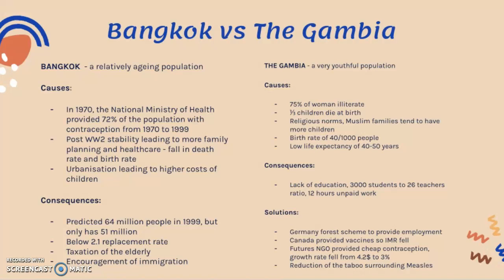Some solutions include Germany investing in a forest scheme to provide employment in the Gambia, Canada providing vaccines which led to a fall in the infant mortality rate, and Futures, a non-governmental organization, providing cheap contraception. As a result, the growth rate fell from 4.2 percent to 3 percent.